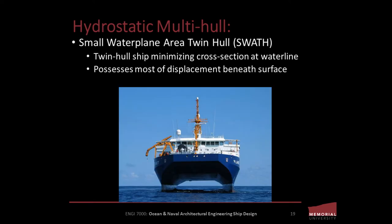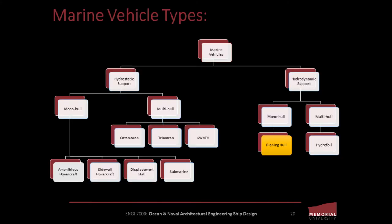A small waterplane area twin hull, better known by the acronym SWATH, is a twin hull ship design that minimizes the hull cross-section area at the waterline. Minimizing the ship's volume near the surface area of the sea minimizes the influence of wave energy, maximizing the vessel's stability. A SWATH vessel possesses most of the displacement necessary to keep the ship afloat beneath the waves, where it is less affected by wave action. And a quick shout out to the SWATH for being another cool Canadian engineering creation.